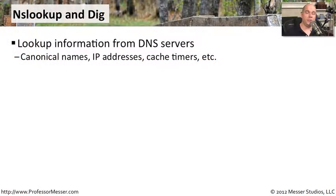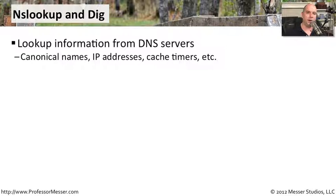One of the most common communications and functions going on your network right now is domain name services — workstations asking for the IP address to get to google.com and the domain name server responding back with that IP address. There are two utilities that can help you troubleshoot whenever you're having problems with name servers: NSLOOKUP and DIG. They are very similar in their functionality, and you may find yourself using one or the other, but not usually both at the same time.